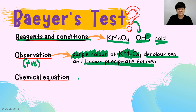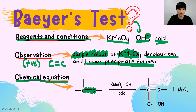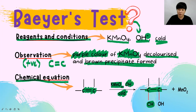The chemical equation for the Bayer test focuses on the carbon-carbon double bond, since the positive observation only applies to it — carbon-carbon single bond shows no changes. When carbon-carbon double bond reacts with KMnO₄ in OH⁻ at cold temperature, the double bond becomes a single bond with OH OH groups added. MnO₂ is also produced, which is your brown precipitate.